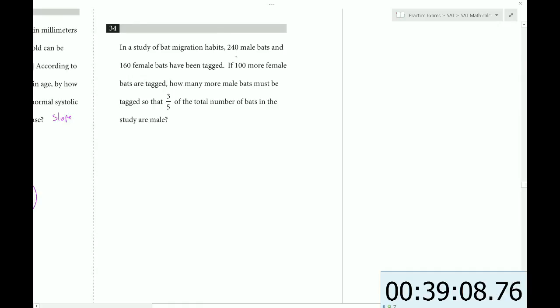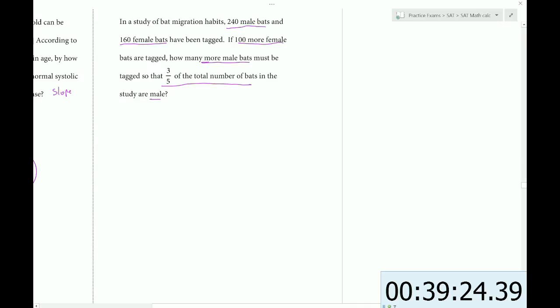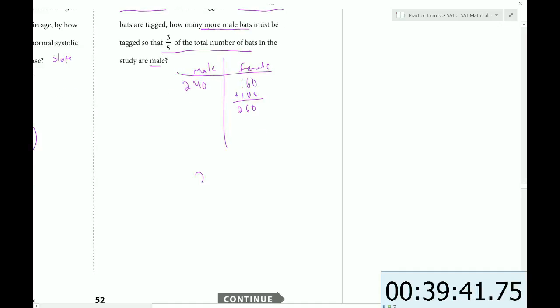In a study of bat migration habits, 240 male bats and 160 female bats have been tagged. If 100 more female bats are tagged, how many more male bats must be tagged so that three-fifths of the total number are male? So right now we have 240 male and we have 160 female. Then we add 100 female, so now we have 260 female. So right now our number of male bats is 240, our number of female bats is 260, so our total is 240 plus 260, which is 500. So this is our total.